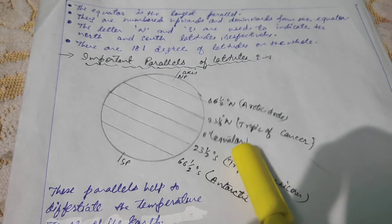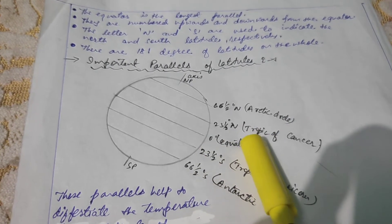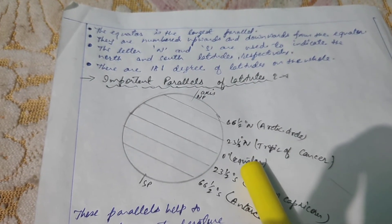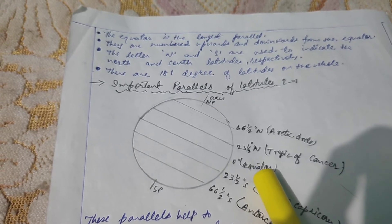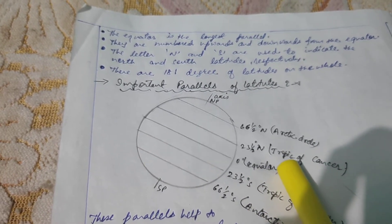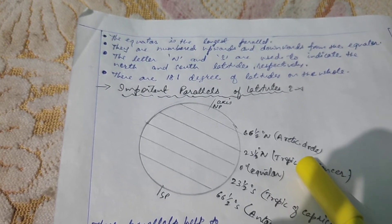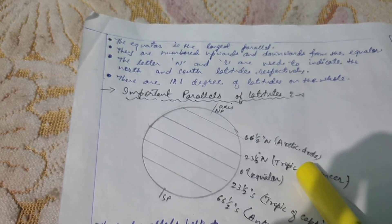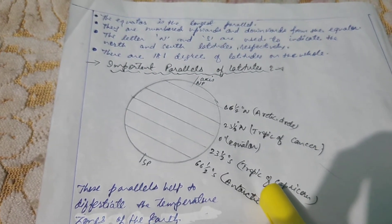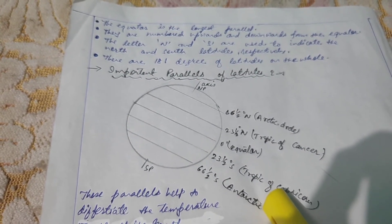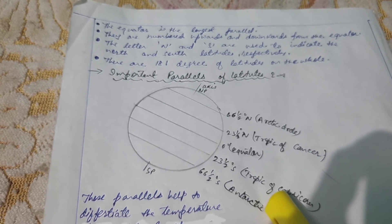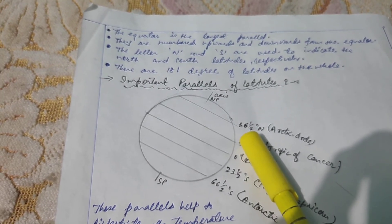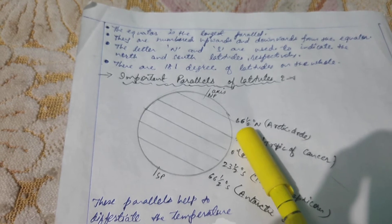Look at the picture. This picture shows the important parallels of latitude. This is 0 degree, that is equator. Or we can say it as 0 degree latitude. The Tropic of Cancer is situated at an angular distance of 23.5 degrees north from the equator. Arctic Circle is situated at an angular distance of 66.5 degrees north from the equator.